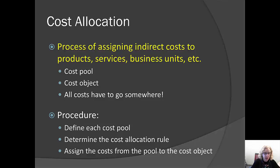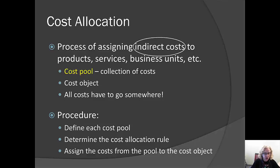In order to allocate costs, we need to identify one or more cost pools. A cost pool is nothing more than a collection of costs. Our cost pool will include only indirect costs, because there's never a need to allocate direct costs. Direct costs have a paperwork trail that helps us know with a fair degree of certainty how much of these costs go into the various things we're assigning costs to. That's not true with indirect costs, which is why generally only indirect costs are allocated.